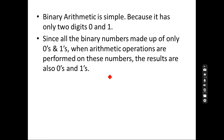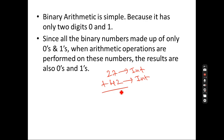To understand binary arithmetic with a simple analogy: suppose I add 27 plus 42. Both are integer numbers, and when you add two integers the result is also an integer — 7 plus 2 is 9, 2 plus 4 is 6, giving 69. In the same way, when you add any two binary numbers, the result is also a binary number.